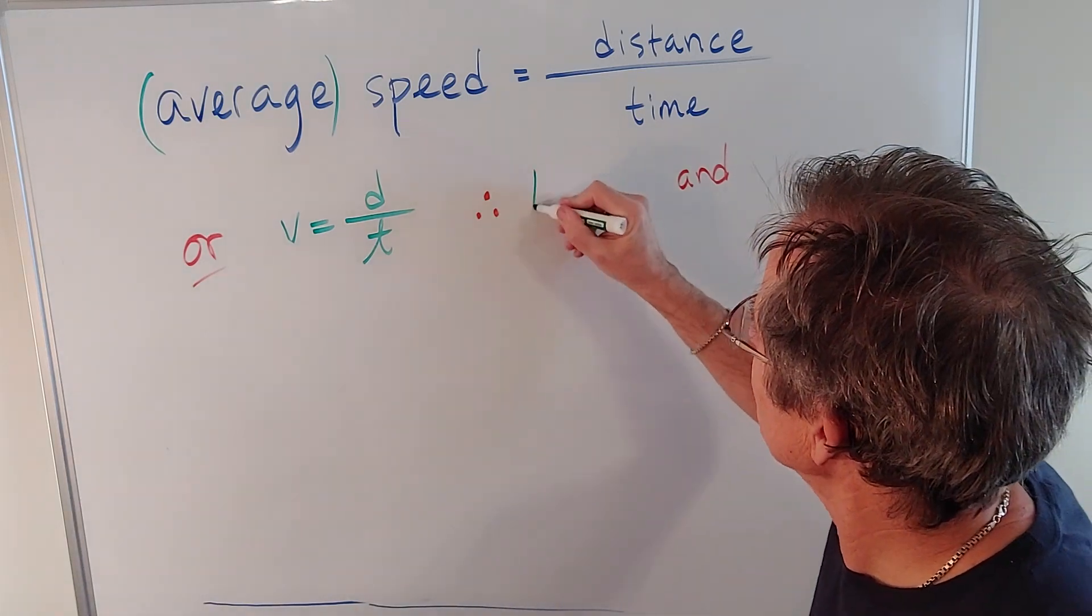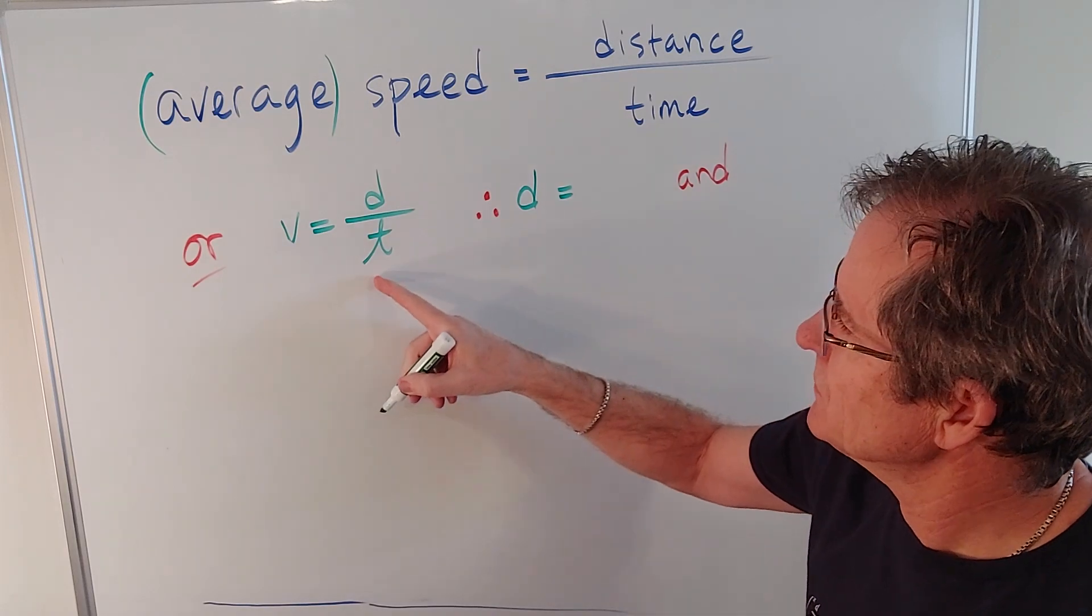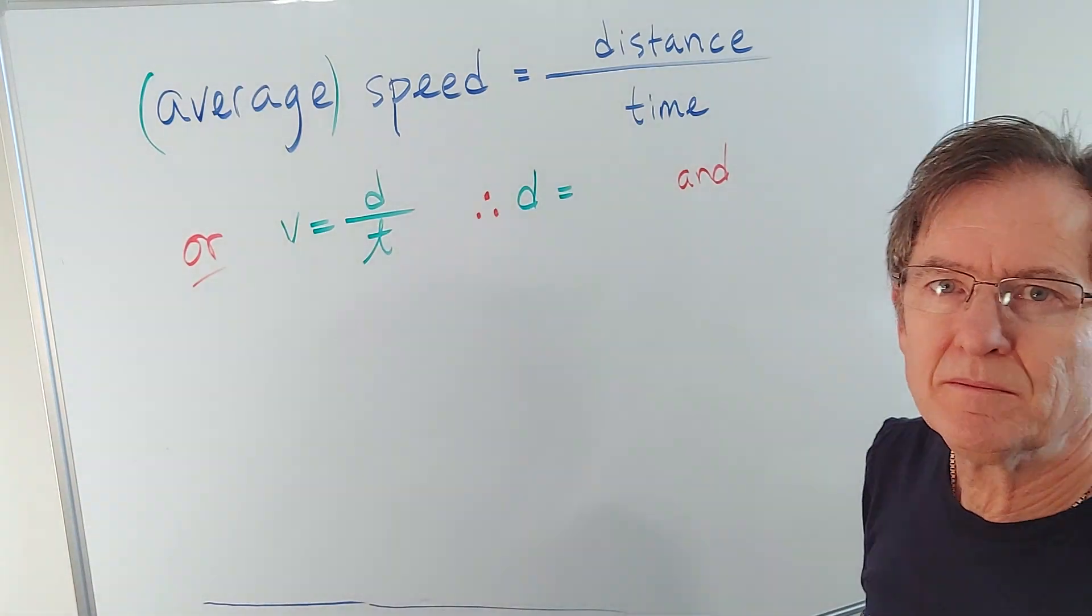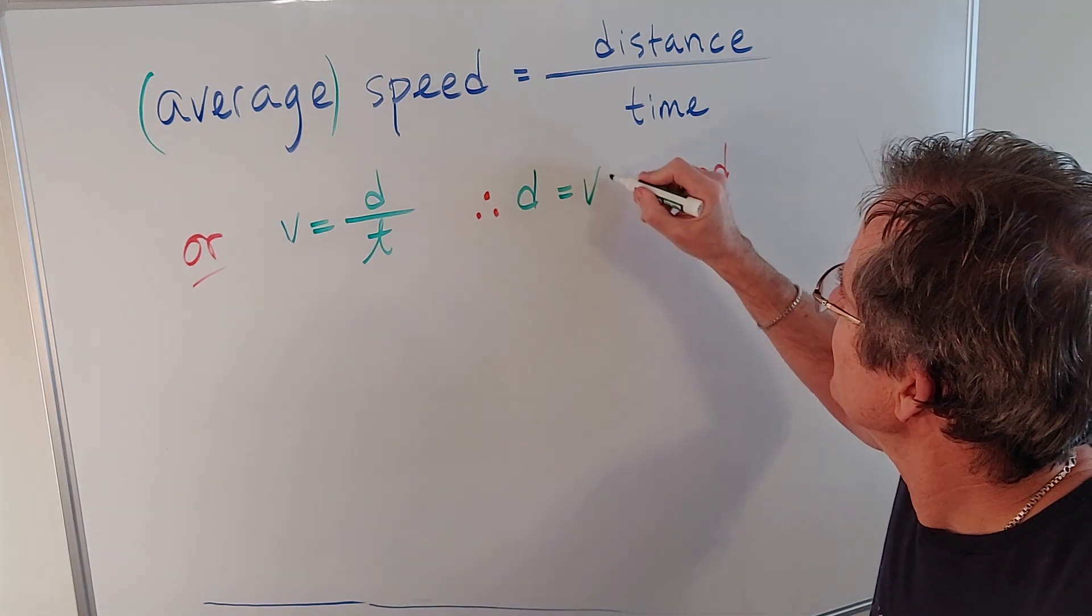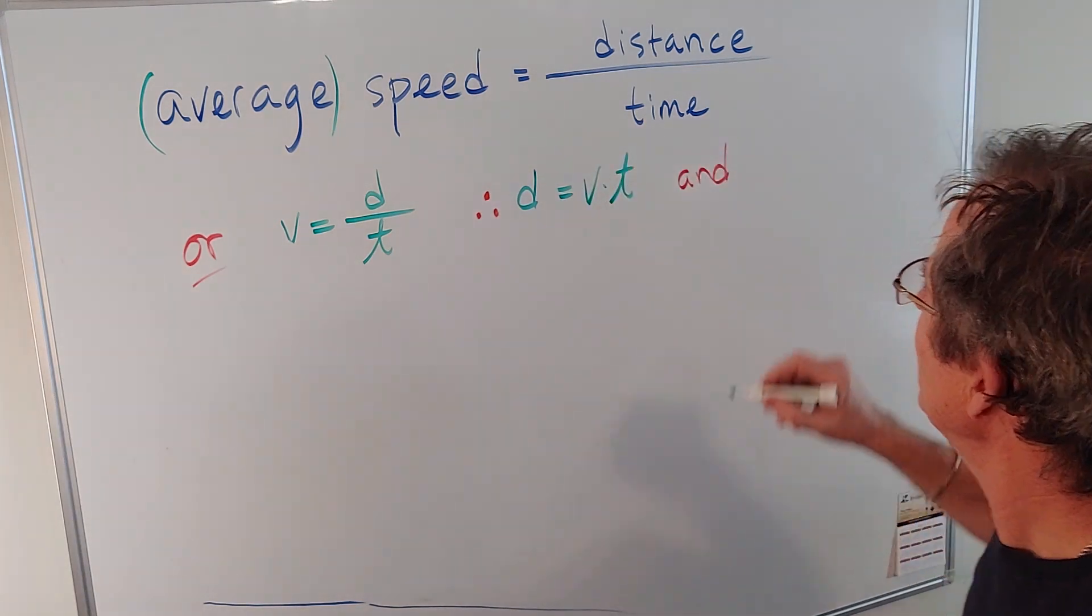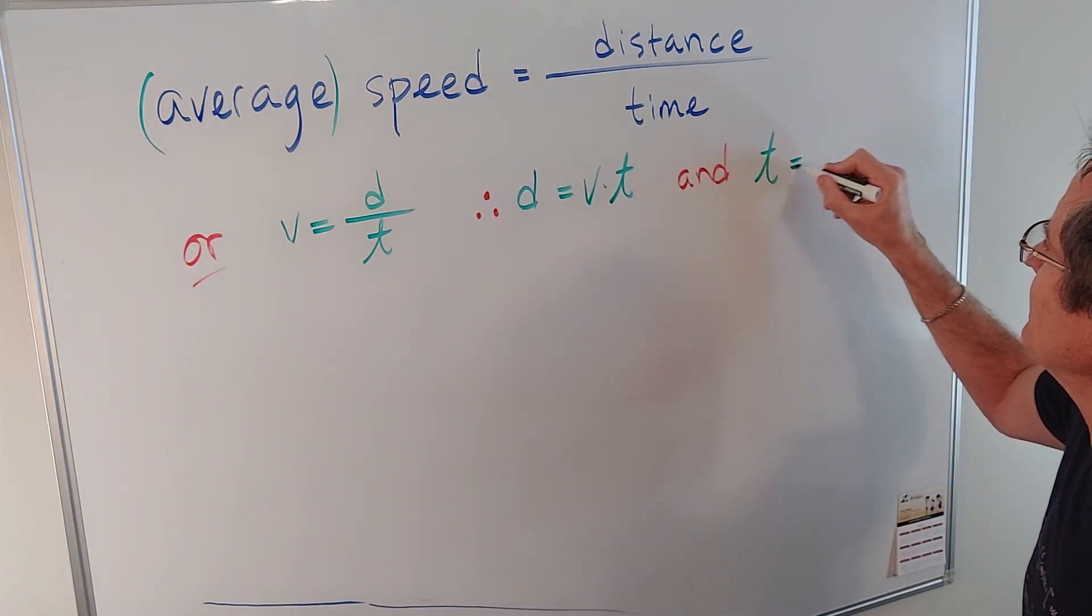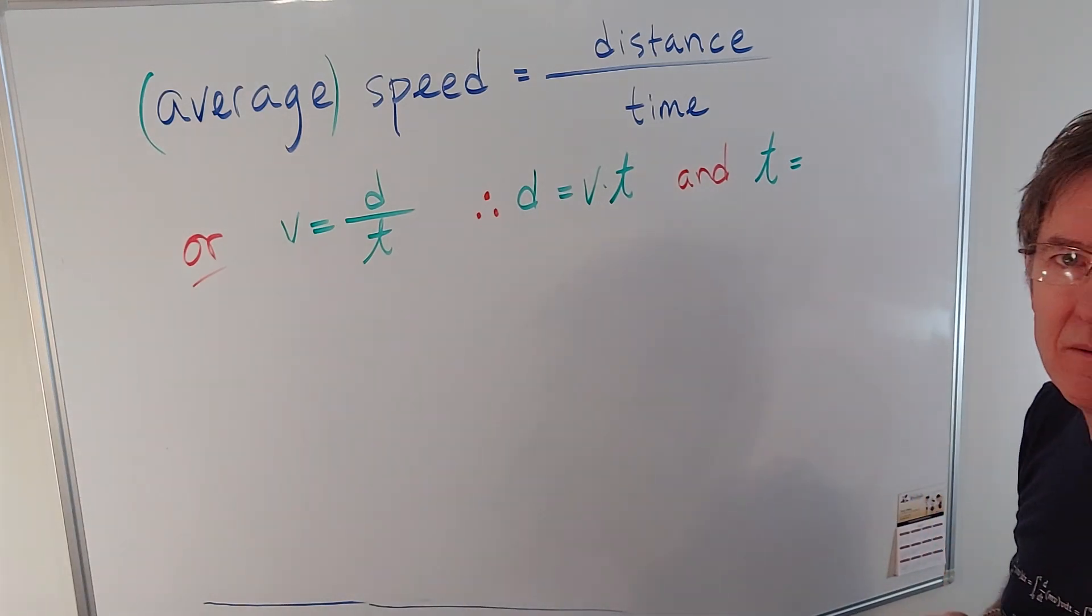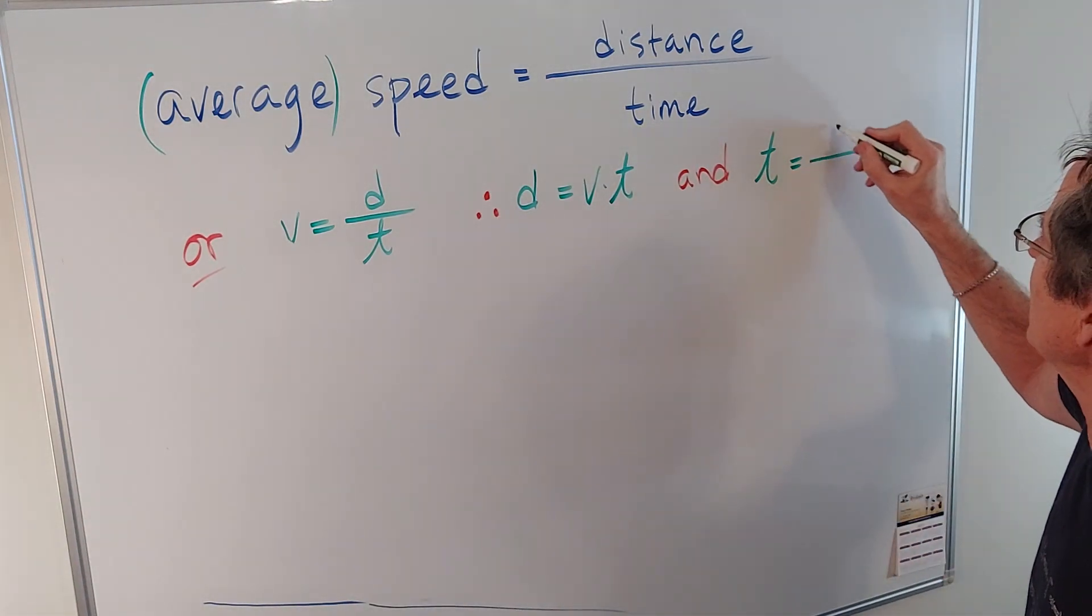Now, let's say I wanted to solve for d. If I rearrange this formula, what's d equal to? That's right, v times t. And what's time equal to? A little bit harder, but hopefully you realize it's d over v.